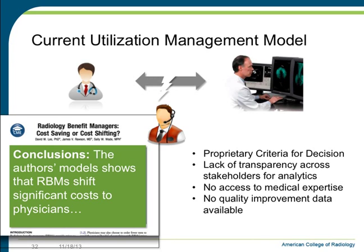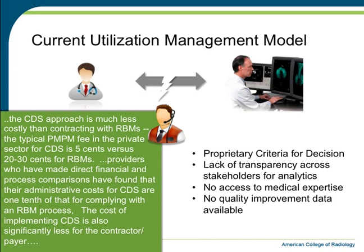Let's look at the current utilization management model without ACR Select, where an RBM is in between the ordering physician and the radiologist. The RBM uses a proprietary set of criteria for decision making. There is no transparency across any of the stakeholders for meaningful analytics about the impact of appropriate imaging on care, no access to medical expertise on behalf of the ordering physician, and no quality improvement data generally available. A recent article in the JACR compared RBMs and their cost structure, concluding that RBMs shift significant cost to physicians versus actually saving money. ICSI's study indicated there are substantial cost savings of using a clinical decision support platform versus an RBM.